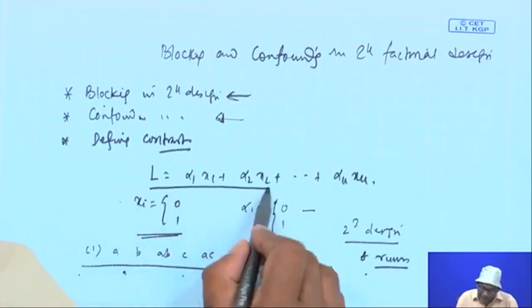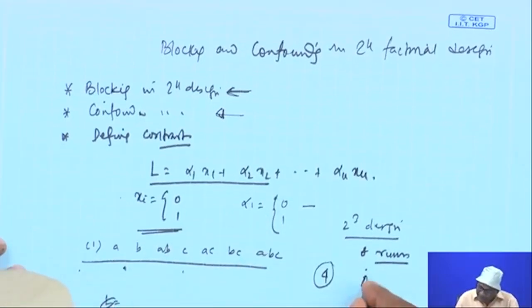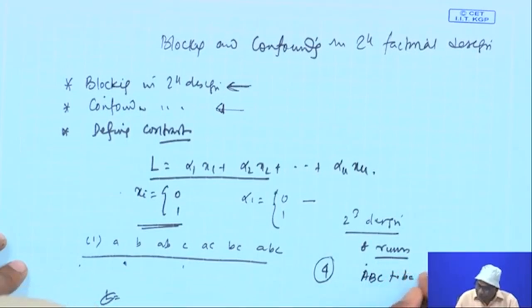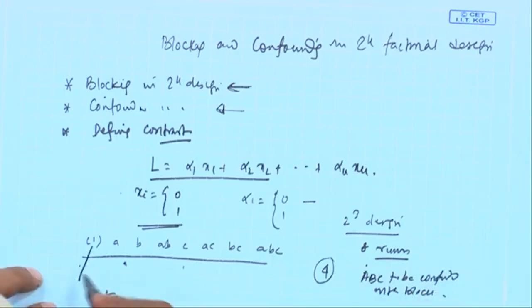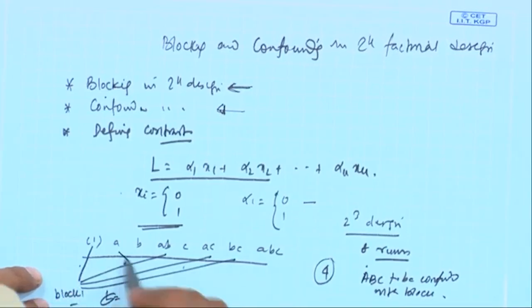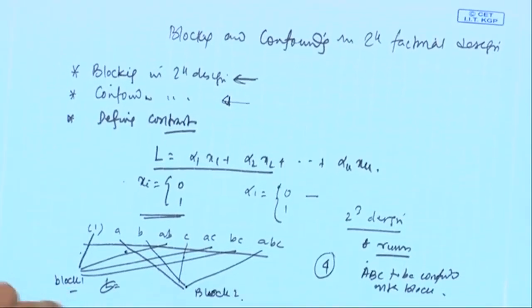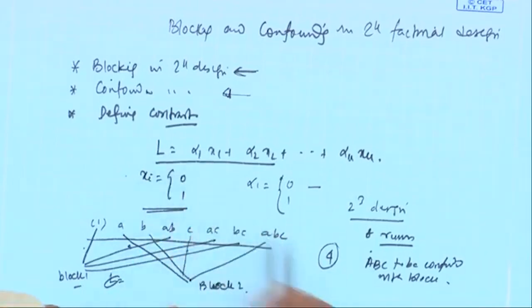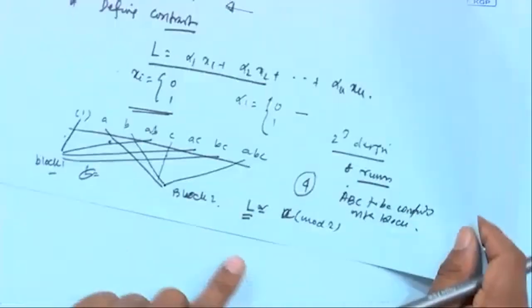Using the defining contrast concept, where L = α₁x₁ + α₂x₂ + ... and the effect to be confounded is ABC, we have seen that 1, ac, ab, bc will go to block 1 and a, b, c, abc will go to block 2. You find out the value of L and evaluate it as L mod 2.